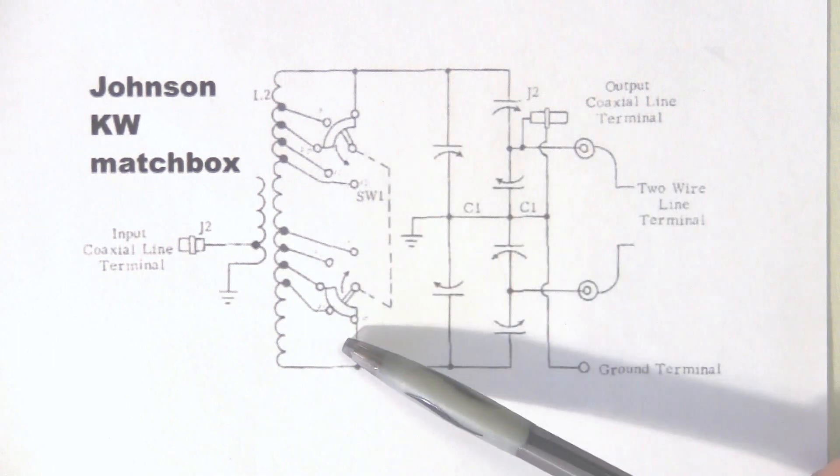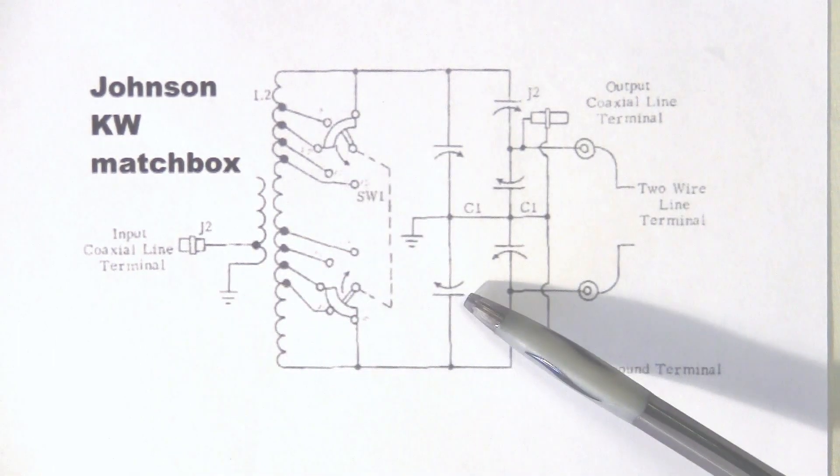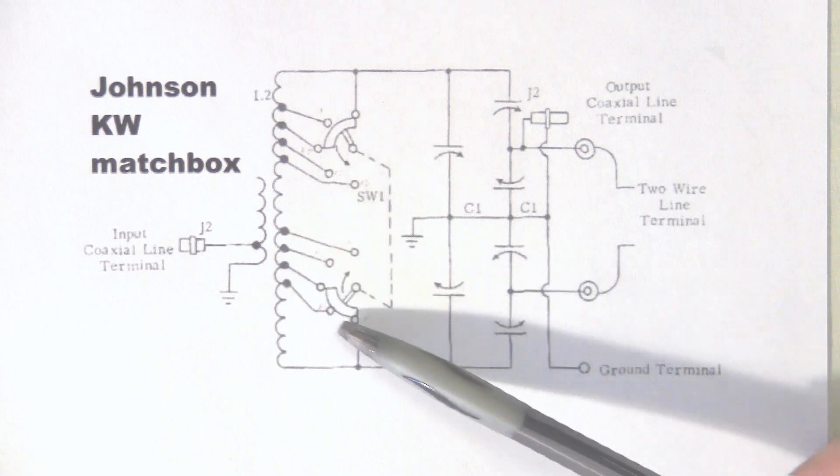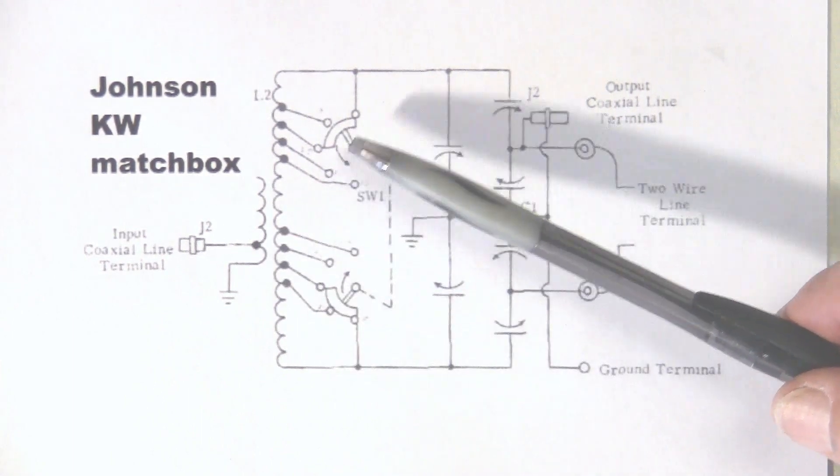Here's your coax input to a link to a tuned circuit. This tunes to the frequency you're transmitting on as a resonant circuit. These two capacitors tune the resonance along with the switching here to select in different inductances.